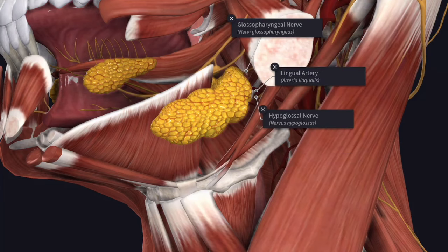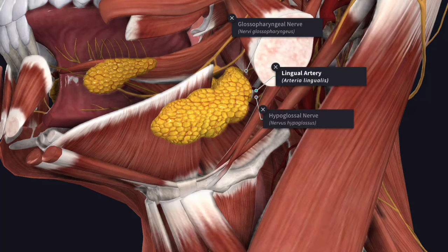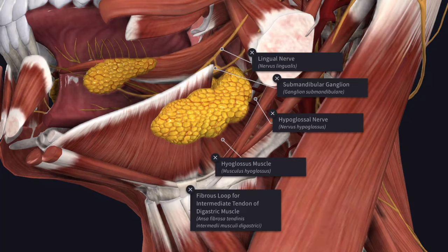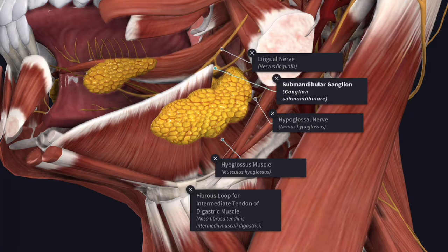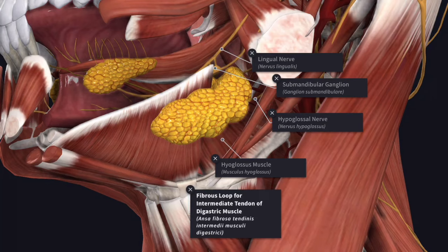The posterior part is also related to the glossopharyngeal nerve, the hypoglossal nerve, and the first part of the lingual artery. The intermediate part rests on the hyoglossus muscle and is related to the lingual nerve, the submandibular ganglion, the hypoglossal nerve, and the intermediate tendon of the digastric muscle.